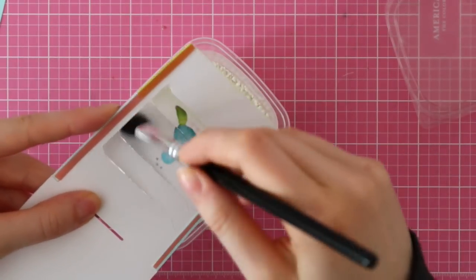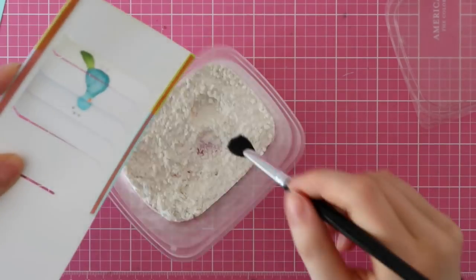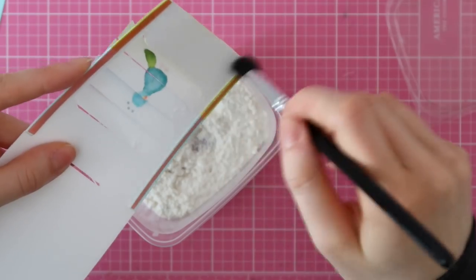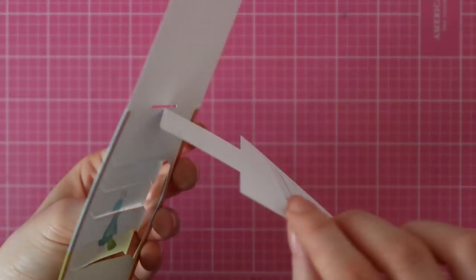Before we move on to the next step, I'm going to apply some cornstarch flour all over my Magic Picture Changer card to make sure that it will slide easily.